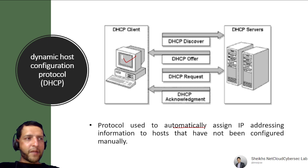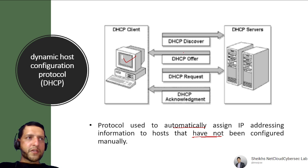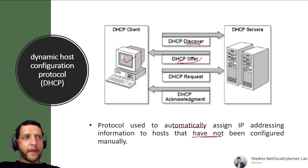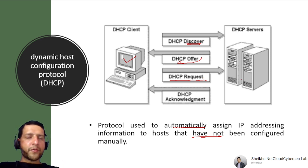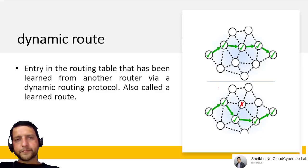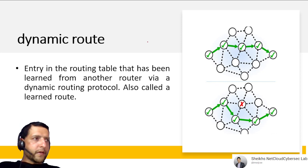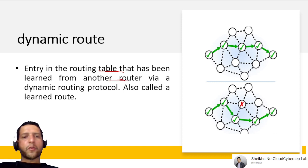DHCP (Dynamic Host Configuration Protocol) automatically assigns IP address information to hosts that have not been manually configured. The process is called DORA: Discover (client broadcasts for a server), Offer (server offers an IP), Request (client accepts and requests IP, subnet mask, default gateway, DNS), and Acknowledge (server confirms). A Dynamic Route is a routing table entry learned from other routers through a dynamic routing protocol — routers share routing tables and adapt when routes fail.